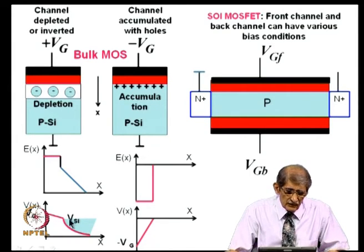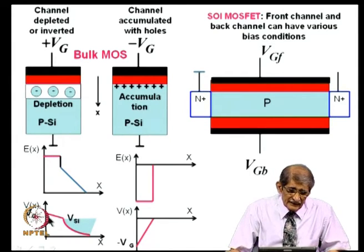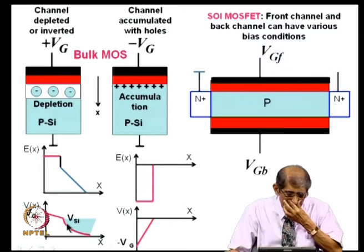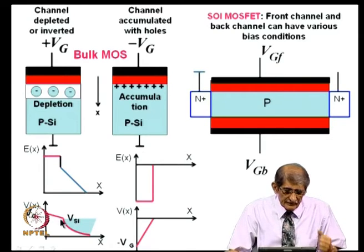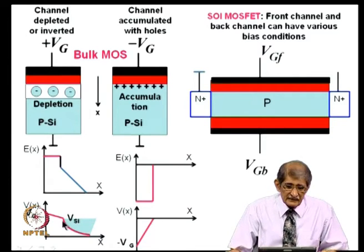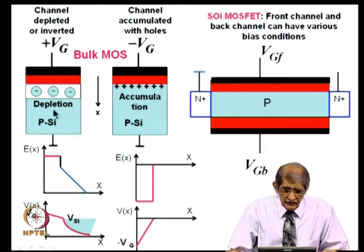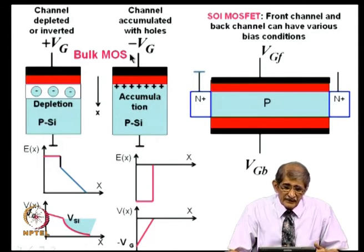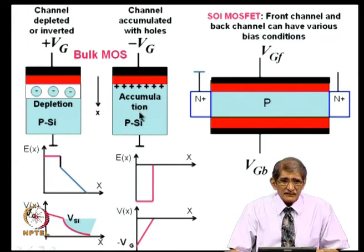The field is (V_g − V_silicon) / T_oxide. V_silicon rises parabolically. It is inverted when V_silicon becomes twice phi_f — that is depletion or inversion. Usually you operate in this region. But if I apply negative voltage to the gate in the bulk MOSFET, the plus charges can be supplied very easily by the majority carriers in the p-type region.